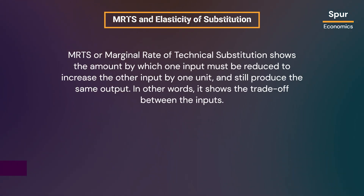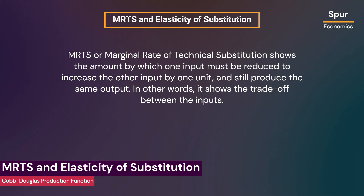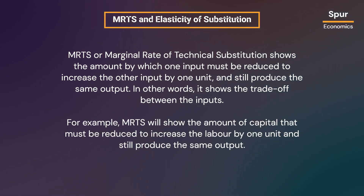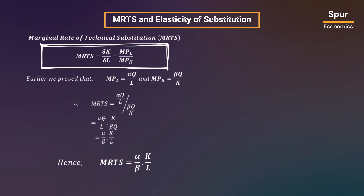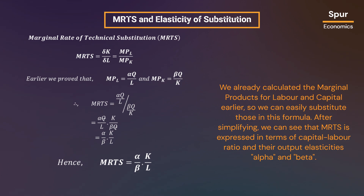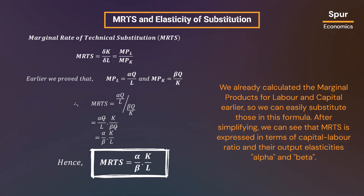MRTS, or marginal rate of technical substitution, shows the amount by which one input must be reduced to increase the other input by one unit and still produce the same output — in other words, the trade-off between the inputs. MRTS can be derived for the Cobb-Douglas production function using the formula shown here. Substituting the marginal products of labor and capital that we already calculated, and simplifying, we can see that MRTS is expressed in terms of the capital-labor ratio and their output elasticities alpha and beta.